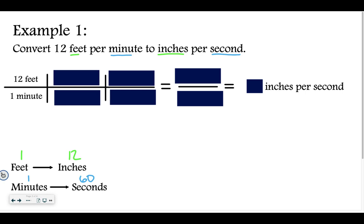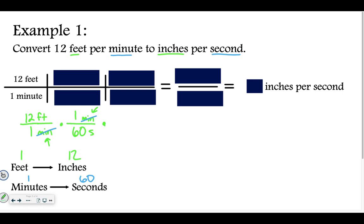I start by setting up a fraction: 12 feet over 1 minute. Then I have to start converting. I can choose to convert time or distance first — I personally like to do time right away, but you can do either one. So I convert 1 minute to 60 seconds. I need to put the minute label on top of the next fraction so the labels cancel. So: 1 minute equals 60 seconds. Those minutes cancel, and that label goes away. Now I have 12 feet per 60 seconds.